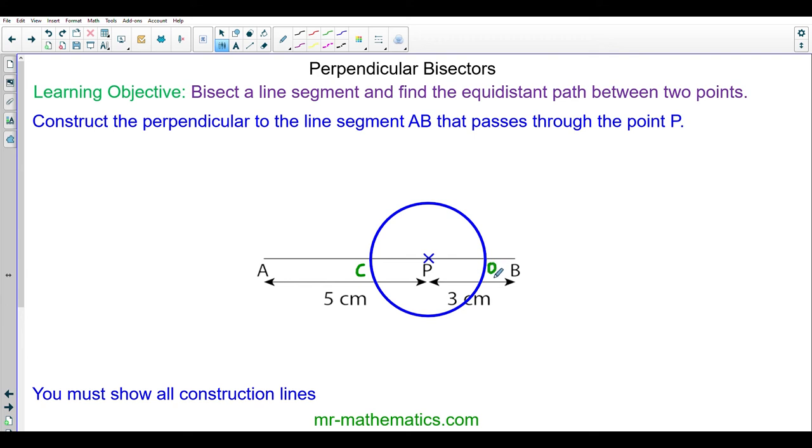And now I'm going to create a perpendicular bisector from the line CD. Again open up your compasses to greater than half the length of the line CD so it passes through point P.